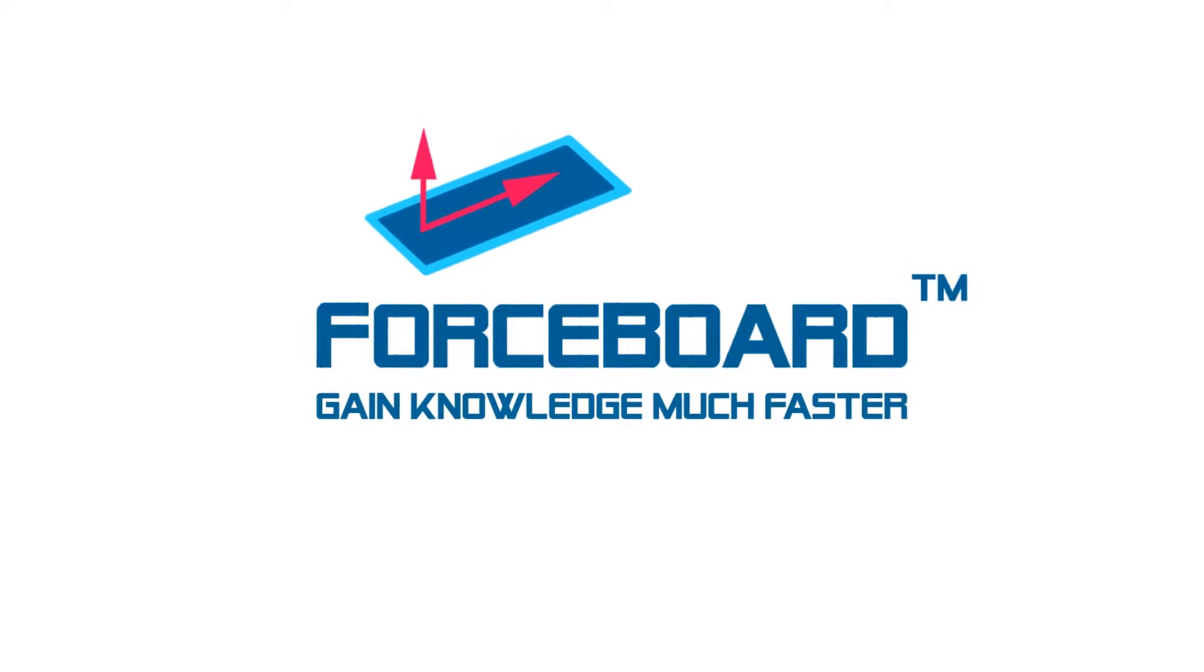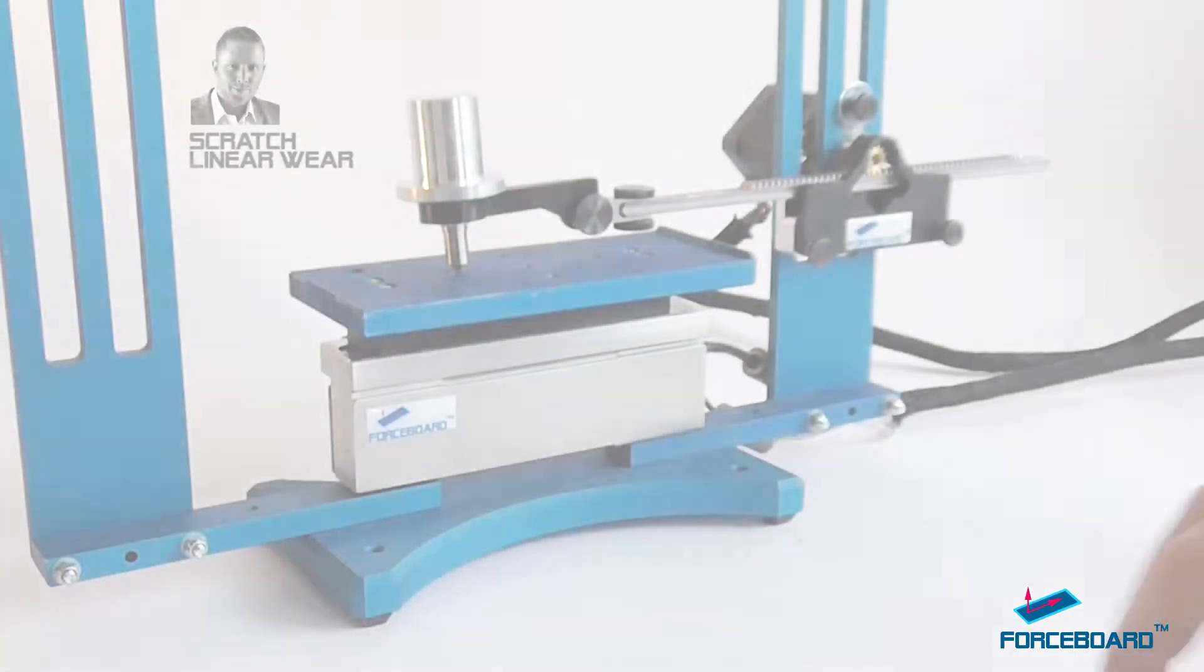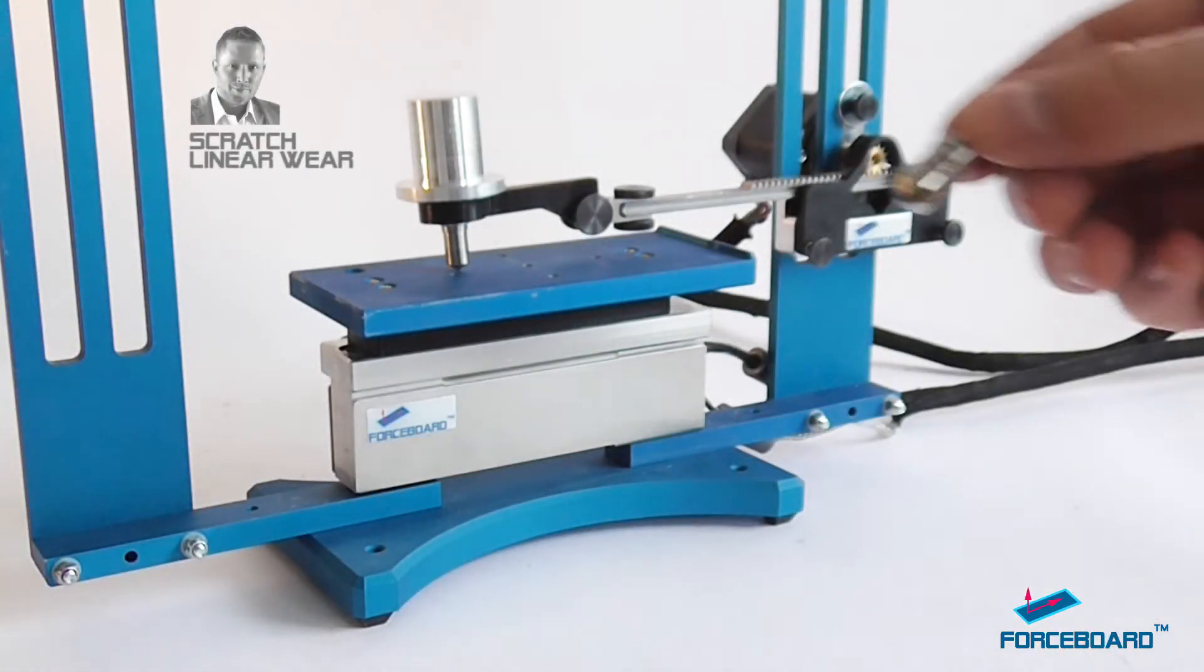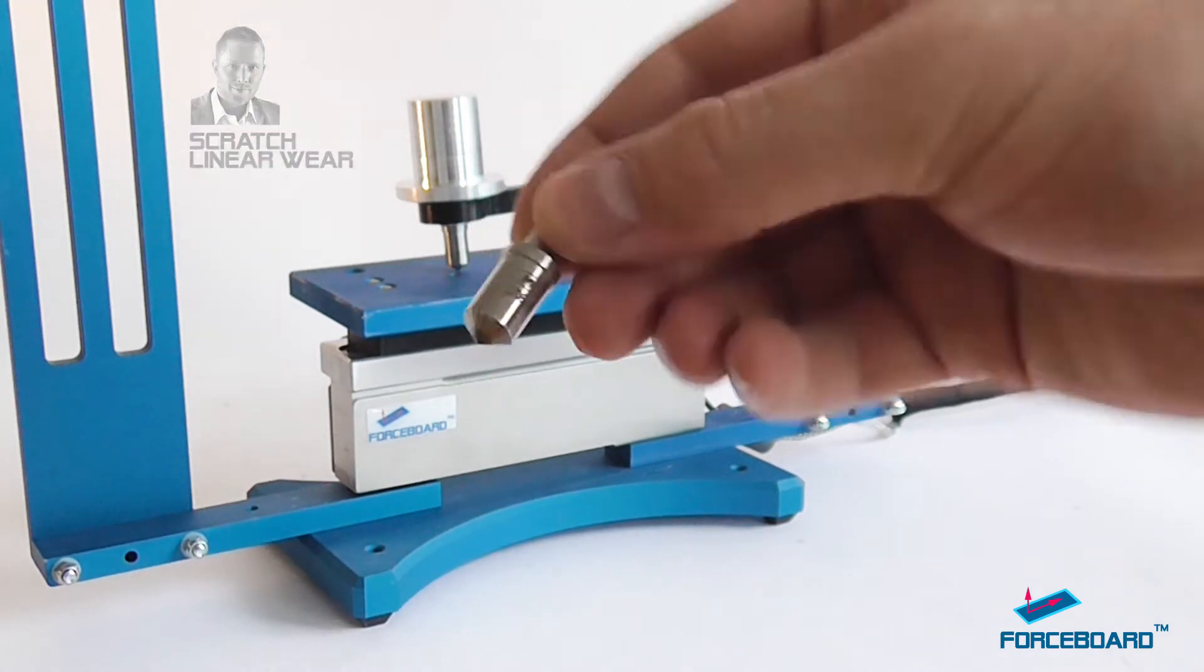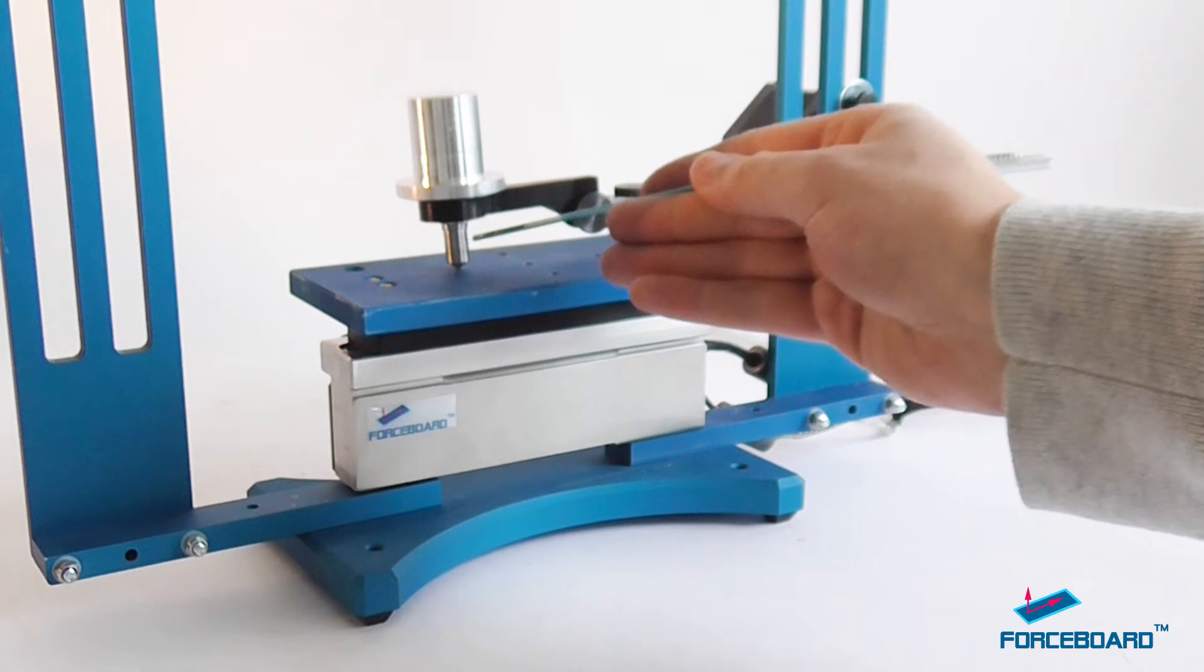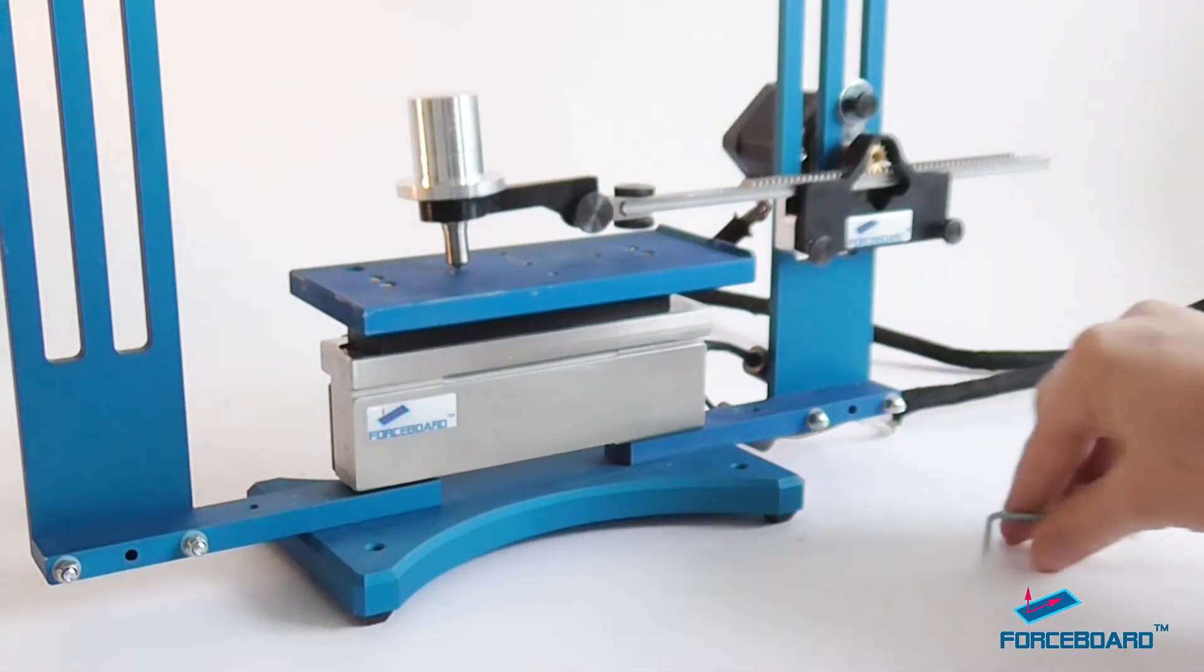My name is Marcus and I'm the founder of Force Board. Now we're going to talk about scratch and linear wear testing. In this test we will be using a Rockwell industrial grade diamond probe with a 200 micrometer tip radius.